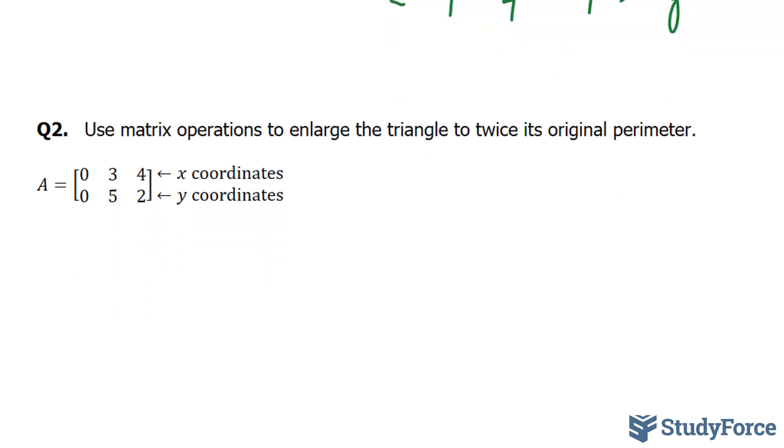Now what if they ask us to use the same matrix and they want us to enlarge the triangle to twice its original perimeter? What we will do is multiply this matrix by a scalar of a factor 2. So I'll take 2 times A. And to multiply a matrix by a scalar, you'll multiply each of the elements by 2.